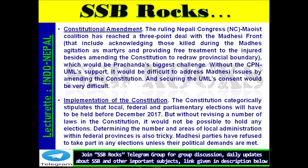Constitutional Amendment: The ruling Nepali Congress (NC) and Maoist coalition reached a three-point deal with the Madhesi Front, including acknowledging those killed during the Madhesi agitation as martyrs and providing free treatment to the injured, besides amending the constitution to redraw provincial boundaries — which would be Prachanda's biggest challenge. Without CPN-UML's support, it would be difficult to address Madhesi issues, and securing the UML's consent would be very difficult. Implementation of the Constitution: The constitution stipulates that local, federal, and parliamentary elections must be held before December 2017, but revising several laws is necessary before elections can be held. Determining the number and areas of local administration within federal provinces is also tricky.